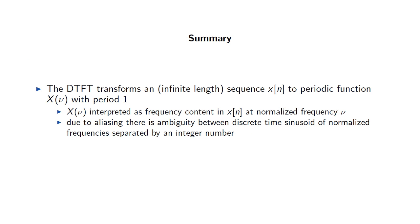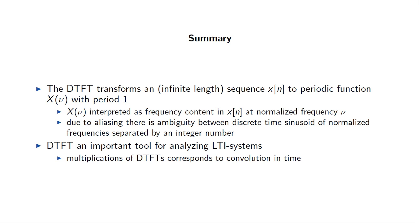In summary, the discrete time Fourier transform takes an infinite-length sequence x[n] and maps it into a periodic function X(ν) with period 1, representing the frequency content of x[n] at each normalized frequency. The transform is periodic with period 1 due to the aliasing property — two sinusoids at frequencies separated by an integer cannot be told apart in discrete time. The DTFT is an important tool for analyzing LTI systems because it transforms the complicated convolution operation in the time domain into a much simpler multiplicative operation in the frequency domain.